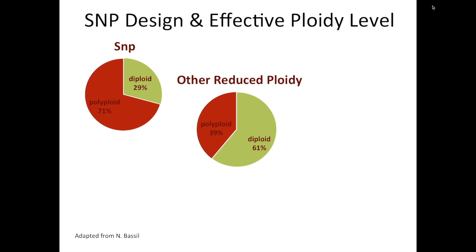Other reduced ploidy approaches that were employed increased that to 61 percent of diploid SNPs detected. These were approaches such as looking for insertions and deletions—usually small insertions and deletions of about six base pairs—when comparing the nine genotypes on the SNP detection panel to the Fragaria vesca genome, targeting SNPs that may be segregating in one subgenome where there is a deletion or insertion at the homeologous locus in the other three subgenomes such that the probe will only interrogate the one subgenome.